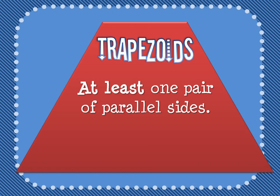I'm going to talk to you about trapezoids, and I want to talk about them in particular because there's more than one definition for a trapezoid. In some videos it says that a trapezoid has exactly one pair of parallel sides, and that's one definition, but the one we're going to focus on is the one that says there is at least one pair of parallel sides.